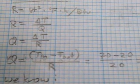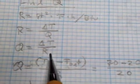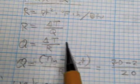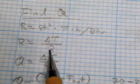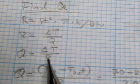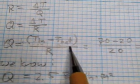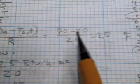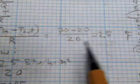We can find Q because we know ΔT — that's 70°F inside minus 20°F outside — and we know the total R-value is 20. Since R = ΔT / Q, rearranging gives Q = ΔT / R. Writing it out: Q = (70 − 20) / 20 = 50 / 20 = 2.5. So Q is 2.5 BTUs per hour per square foot.